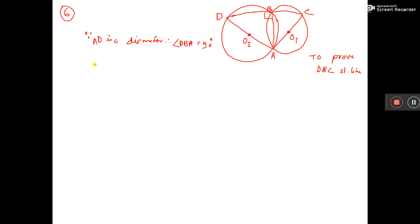This angle is 90 degrees. Again, since AC is a diameter, therefore angle CBA equals 90 degrees. This one is also a semicircular angle.